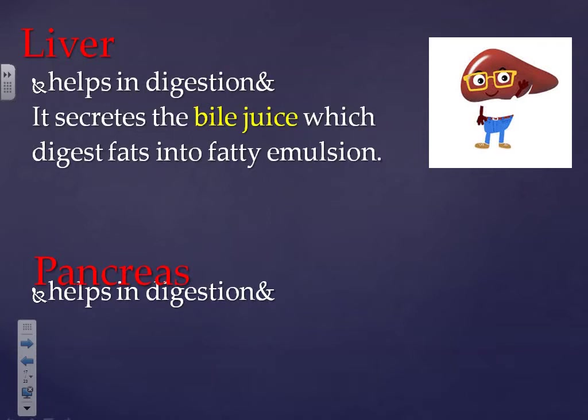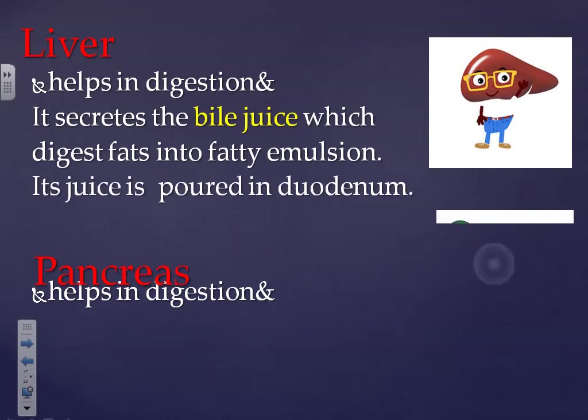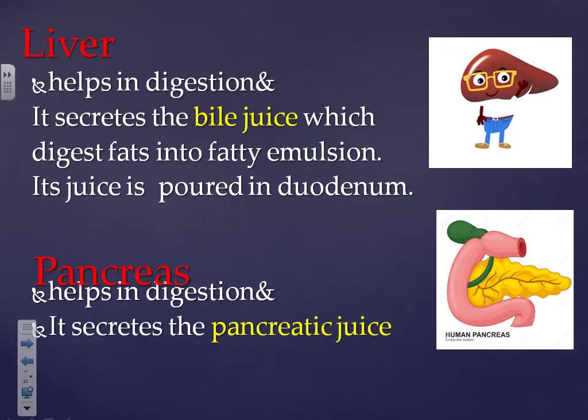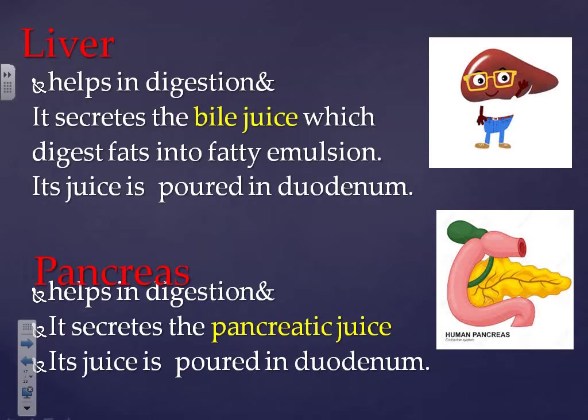The pancreas also helps in digestion. It secretes pancreatic juice, which is poured into the duodenum as well. So both the liver and the pancreas pour their secretions into the duodenum: the liver secretes bile juice to digest fats into fatty emulsion, and the pancreas secretes pancreatic juice to help in digestion.